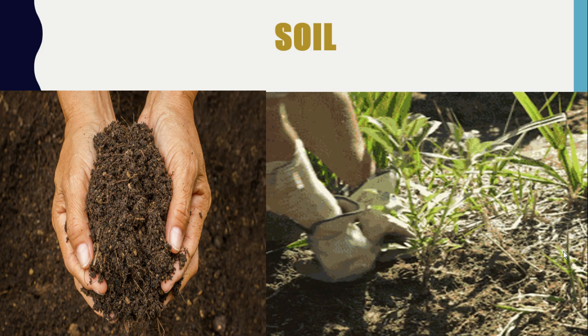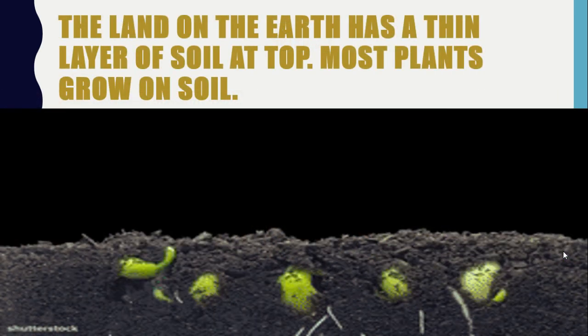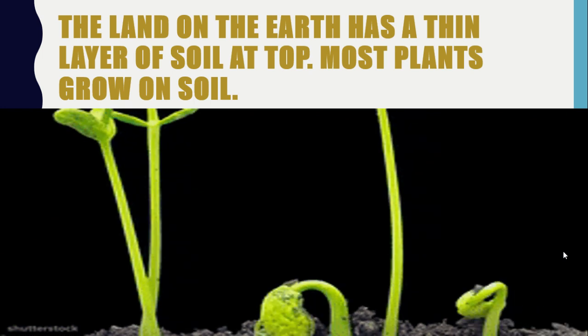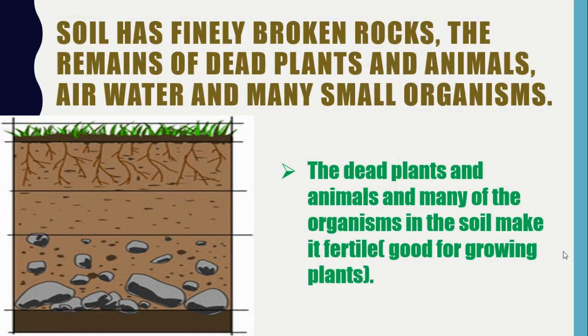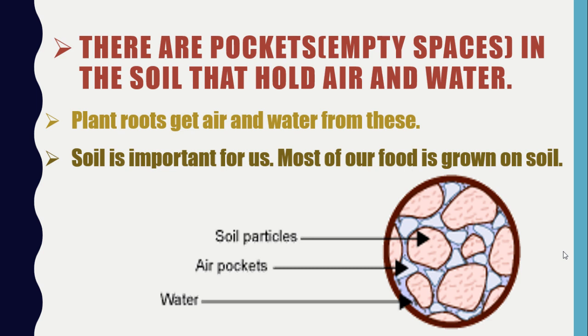Now let us learn about soil. The land on the Earth has a thin layer of soil at the top, and most plants grow on soil. Soil has finely broken rocks, the remains of dead plants and animals, air, water, and many small organisms. The dead plants and animals and many of the organisms in the soil make it fertile, meaning good for growing plants. There are pockets, or empty spaces, in the soil that hold air and water. Plant roots get air and water from these spaces. Soil is important for us because most of our food is grown on soil.